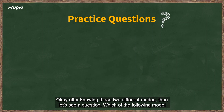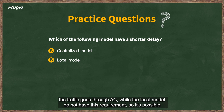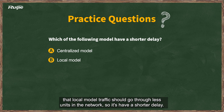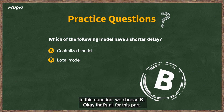Finally, a review question: which forwarding model has a shorter delay? Since centralized forwarding requires all traffic to go through AC while local forwarding does not, local forwarding traffic passes through fewer network nodes. Therefore local forwarding has a shorter delay — the answer is B.